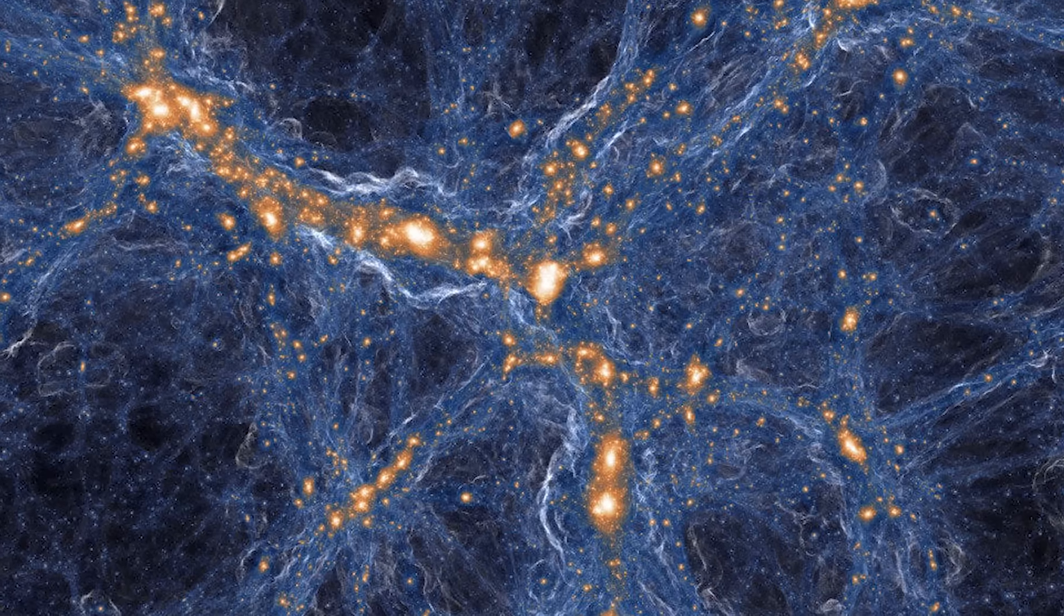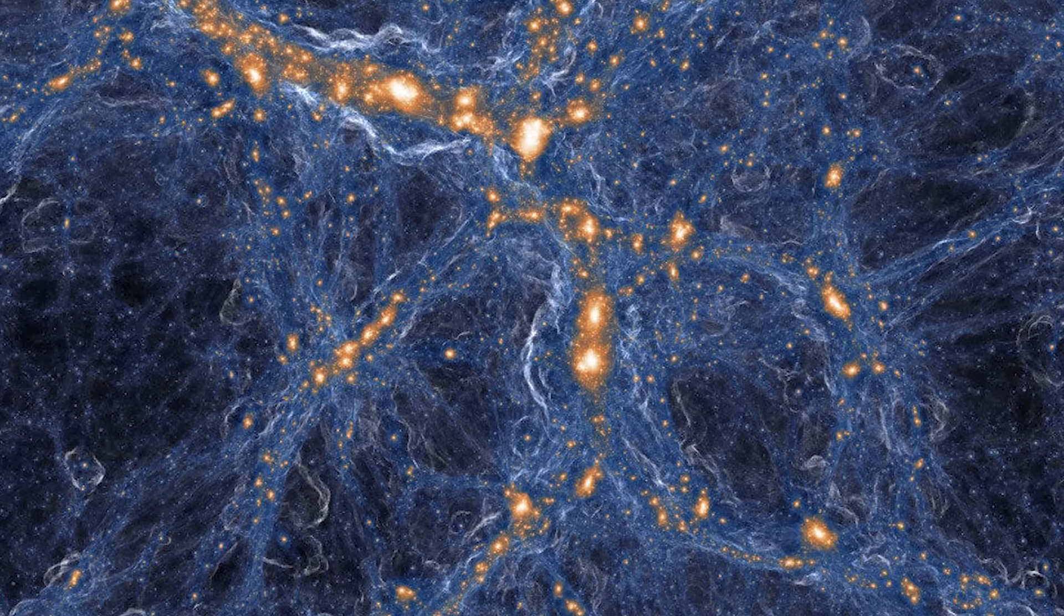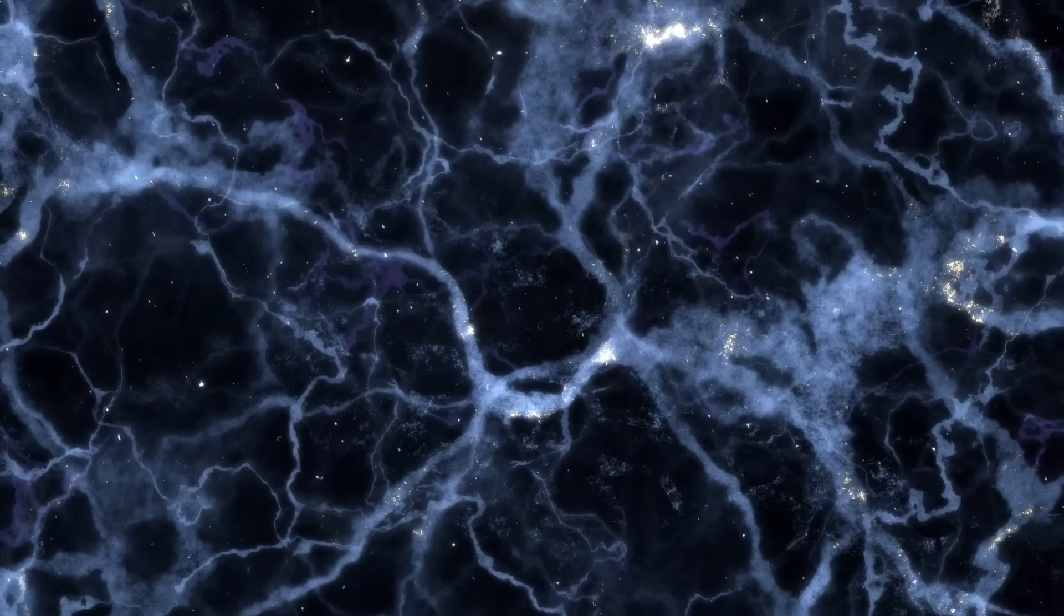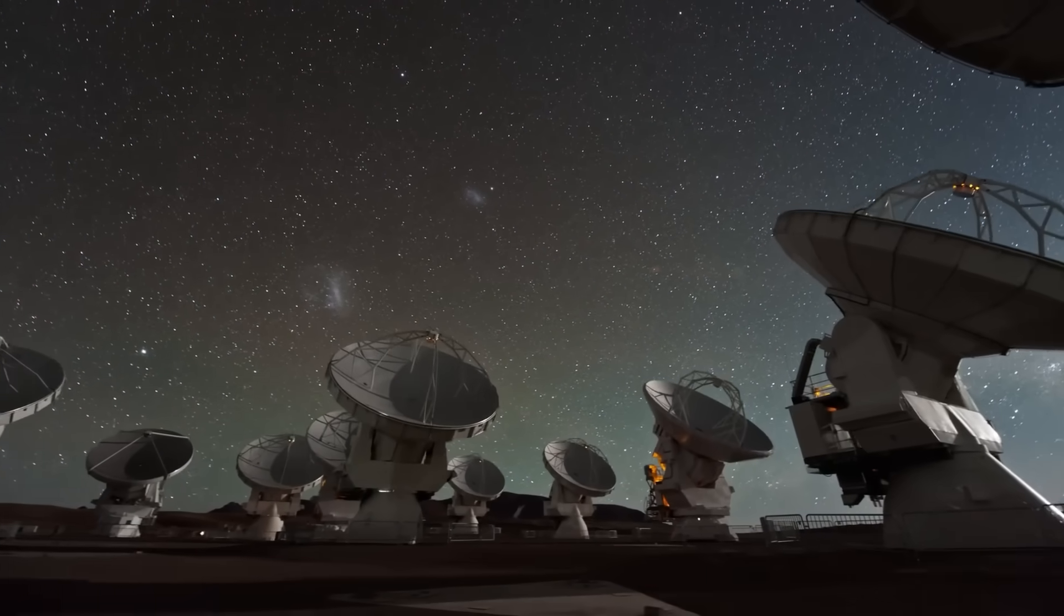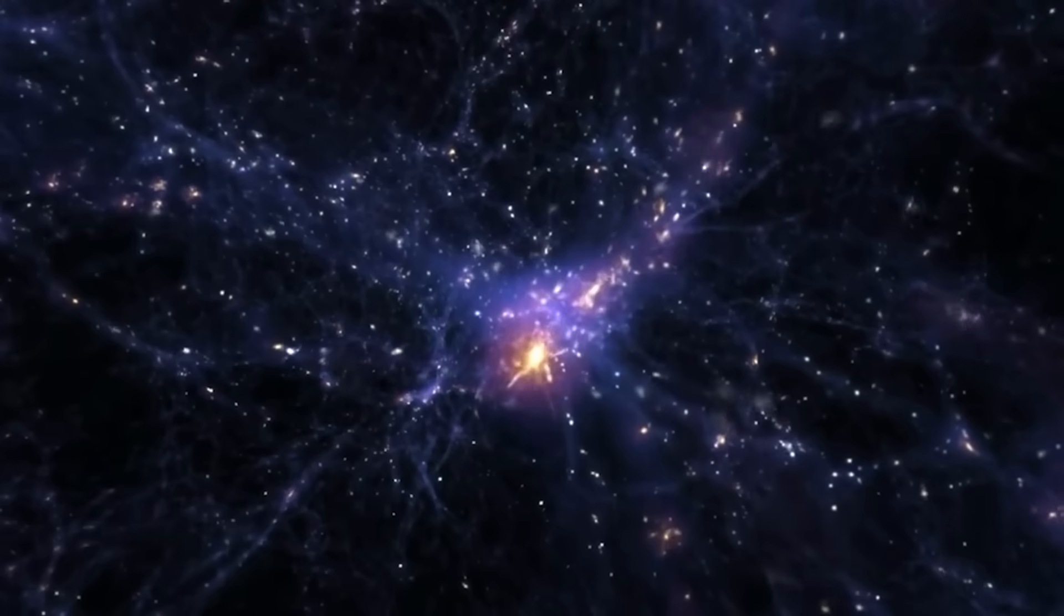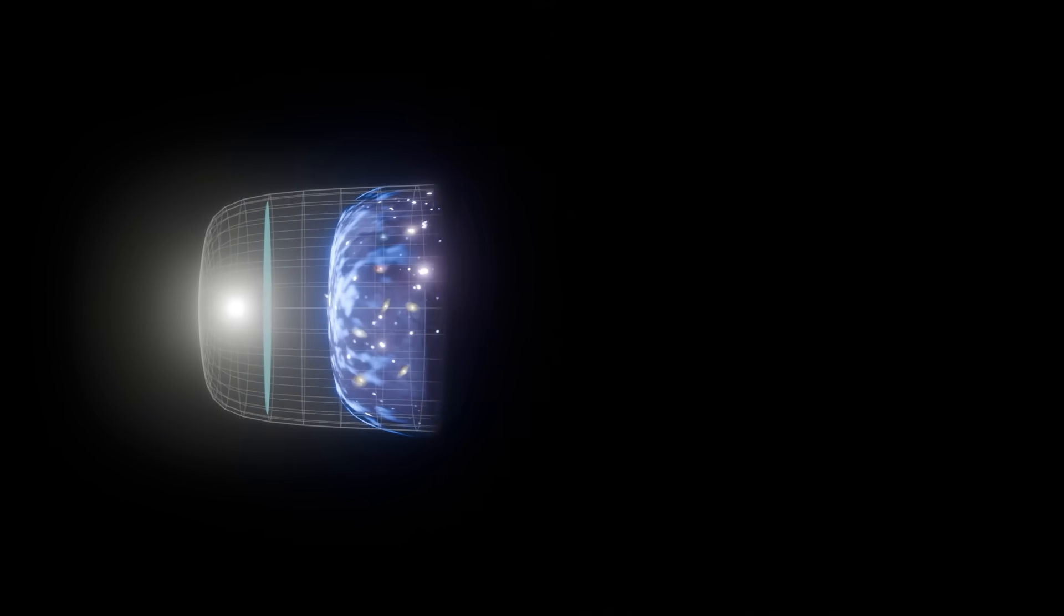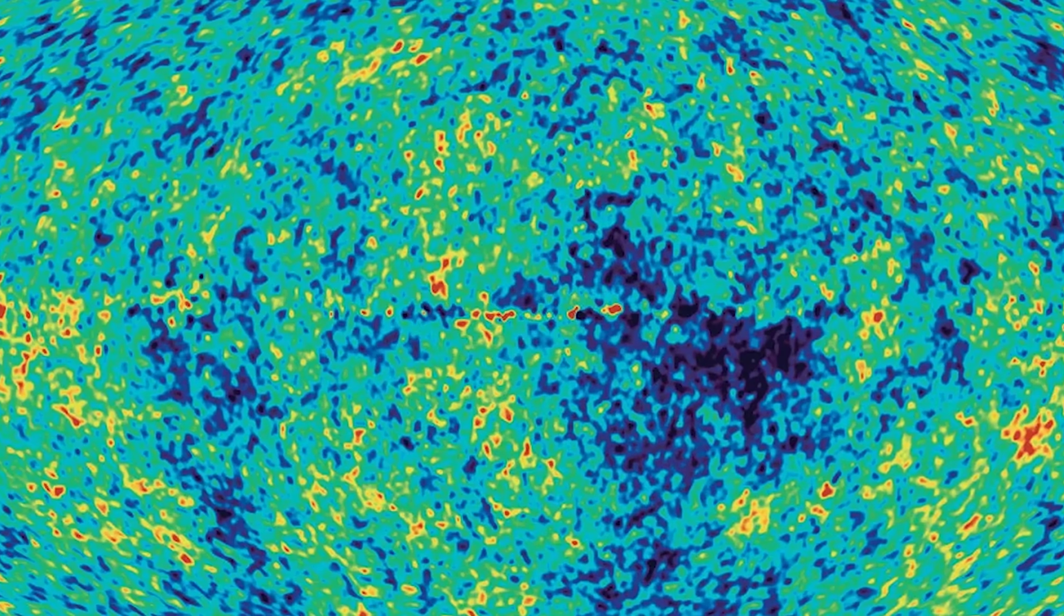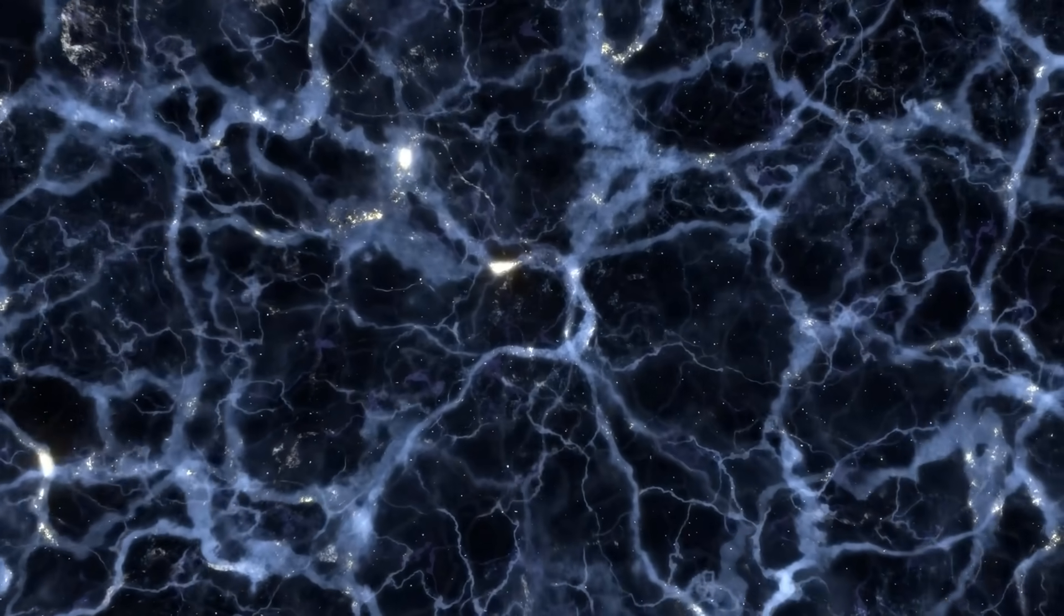It's also important to know that these superstructures aren't forever. Over billions of years, gravity and cosmic expansion will cause them to break apart into smaller pieces. But right now, they are some of the biggest and most complex things we've ever found in the universe. By studying giants like Quipu and Shapley, astronomers are uncovering the universe's history, how galaxies came together, how gravity sculpted the cosmos, and how these colossal webs still influence what we see today. They even help explain why our measurements of cosmic expansion sometimes clash and why ancient light, like the cosmic microwave background, carries subtle distortions. In many ways, these titanic structures are key to unlocking the deepest mysteries of the universe.